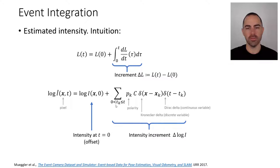And then we sum here on the right something that comes from the events. So we take all the events that happen from 0 to t with timestamps tk and we sum the polarities and we multiply also by the contrast threshold to get physical units of intensity.